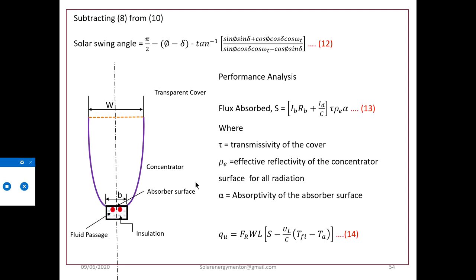Now thermal performance: the flux absorbed S (in watts) is calculated using: S = [I_b × R_b + I_d × C] × τ × ρ_e × α, where I_b is beam radiation intensity on a horizontal plane, R_b is the tilt factor for beam radiation, I_d is diffuse radiation intensity, C is the concentration ratio (W/b), τ is transmissivity of the cover, ρ_e is effective reflectivity (ρ raised to m), and α is absorptivity of the absorber surface.